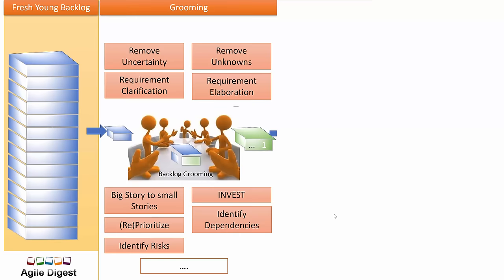Assume this is our product backlog — a very fresh product backlog where nothing is yet groomed. The product owner has created the backlog and there are lots of stories. When we actually do grooming, we have a session of one or two hours. We pick the first story, and the developer, tester, and scrum master — who facilitates — along with the product owner, go through each story and clarify doubts. The entire team gets clarification on all requirements, removes all uncertainty, removes unknowns, and elaborates the requirement.